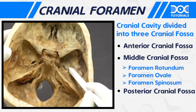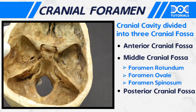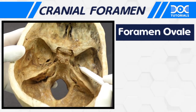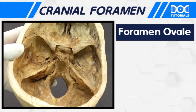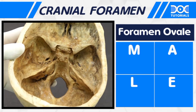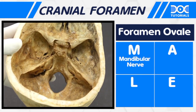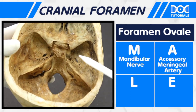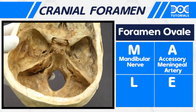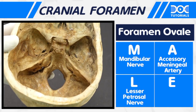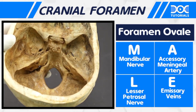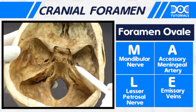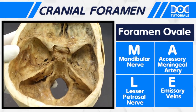The foramen ovale is very important and we remember the structures passing through it with the mnemonic MALE. M stands for the mandibular nerve, A stands for accessory meningeal artery which enters the cranium from here, L stands for lesser petrosal nerve, and E stands for emissary veins.